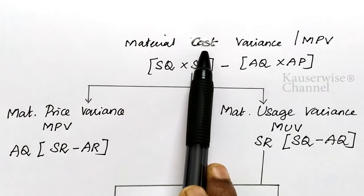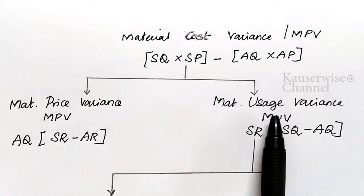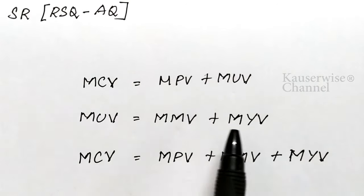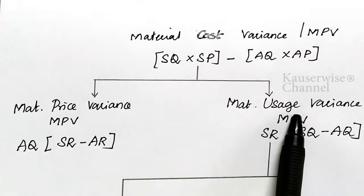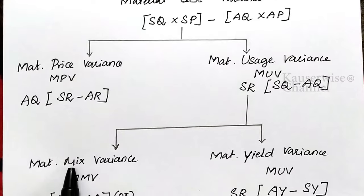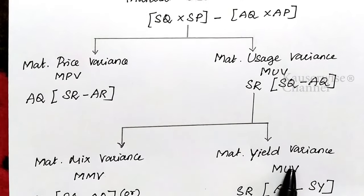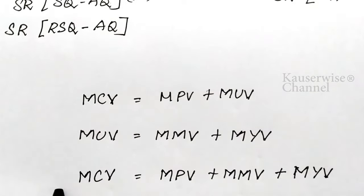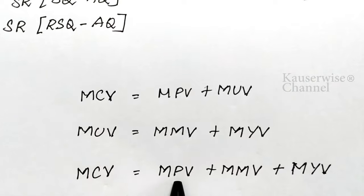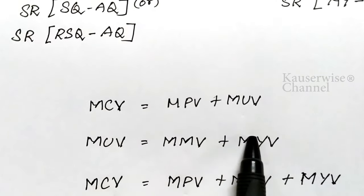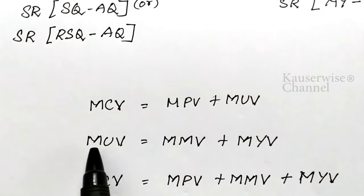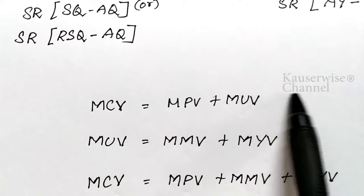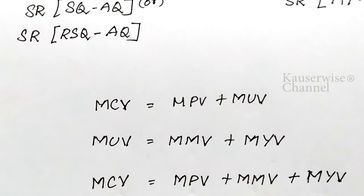There are three key equations. First: material cost variance equals material price variance plus material usage variance. Second: material usage variance equals material mix variance plus material yield variance. Third: material cost variance equals material price variance plus material mix variance plus material yield variance — since mix plus yield equals usage, you can substitute accordingly.